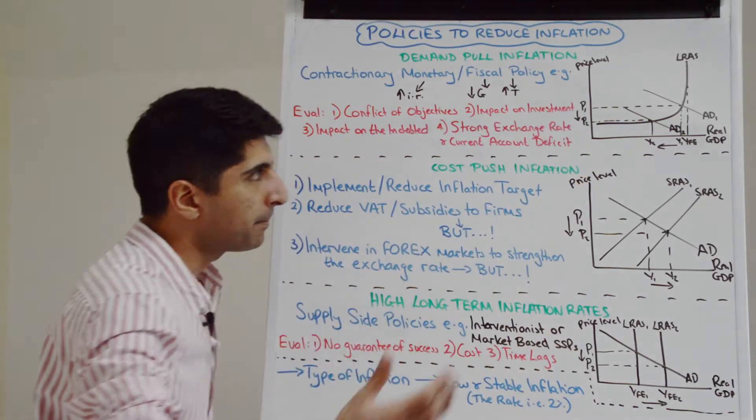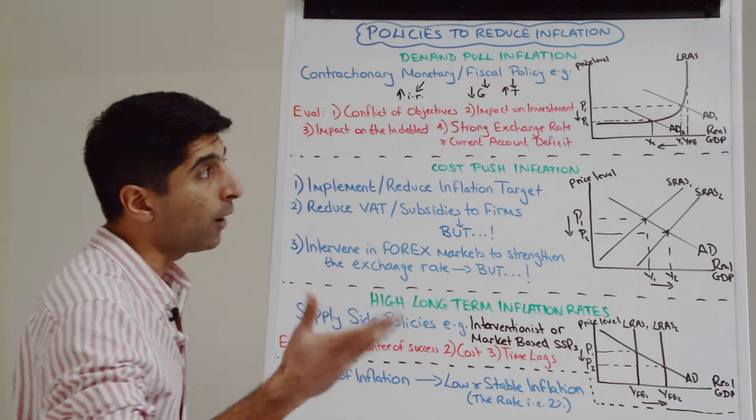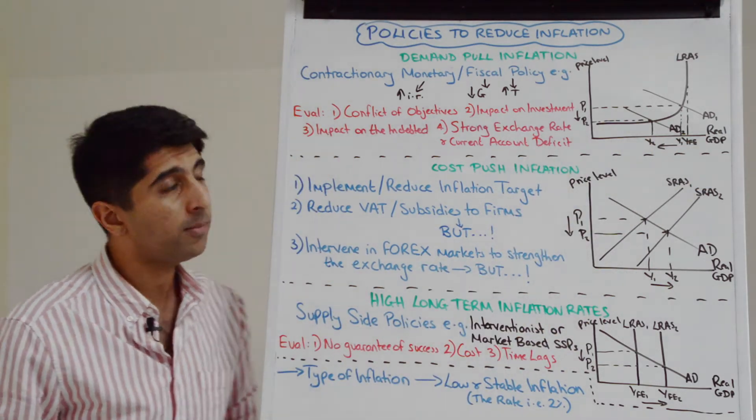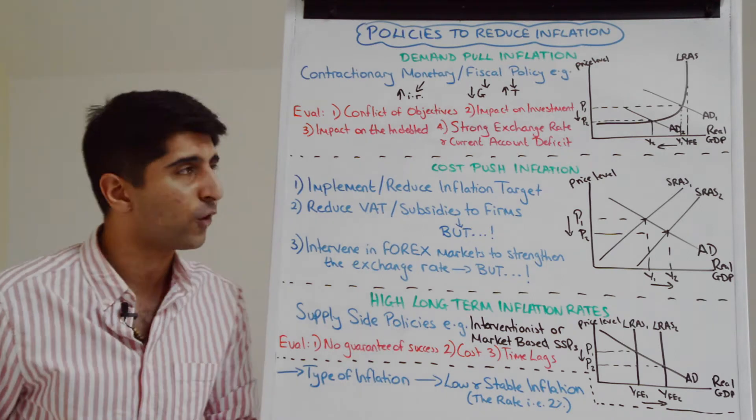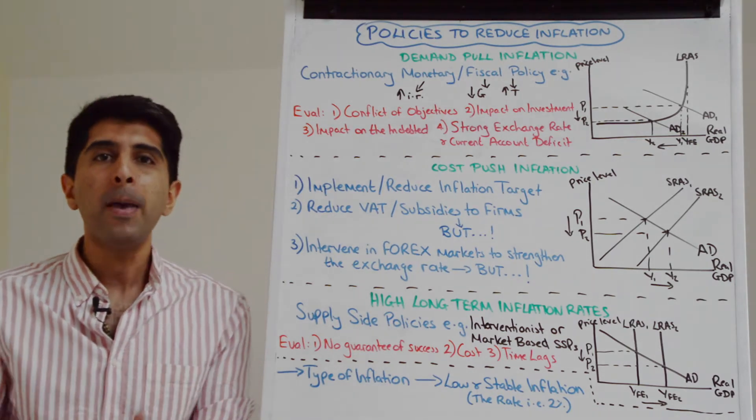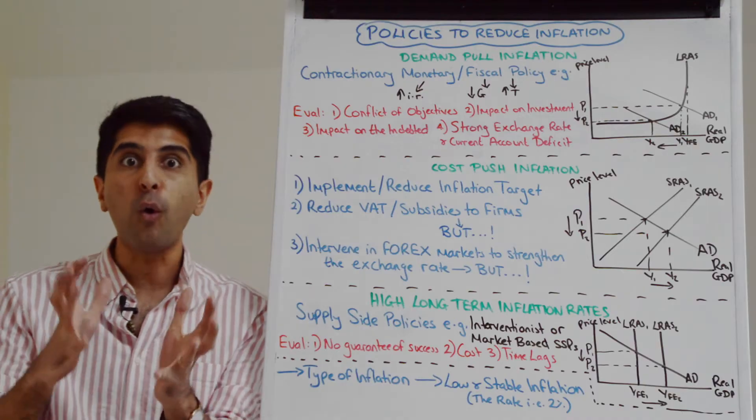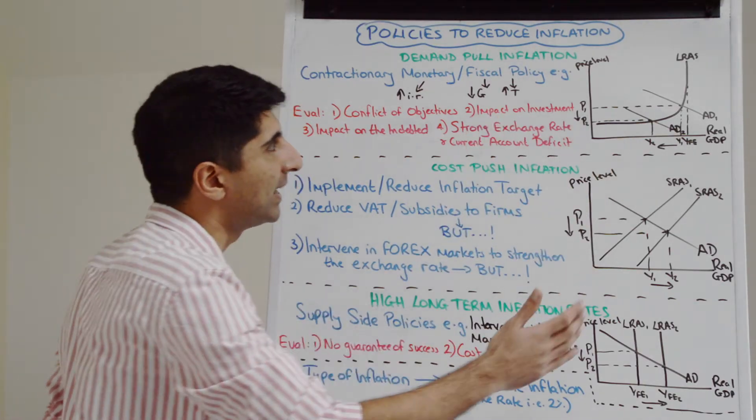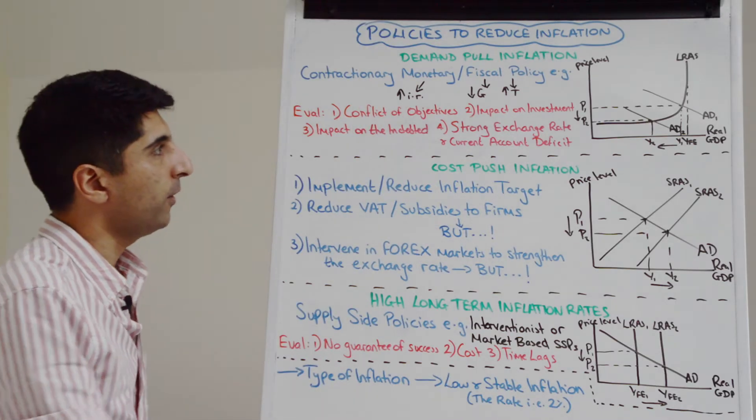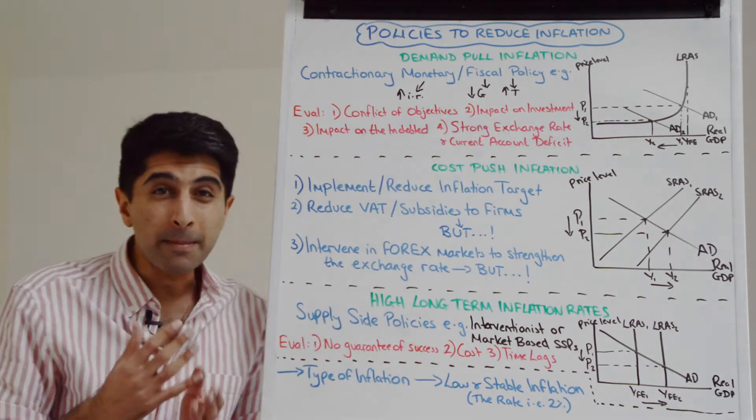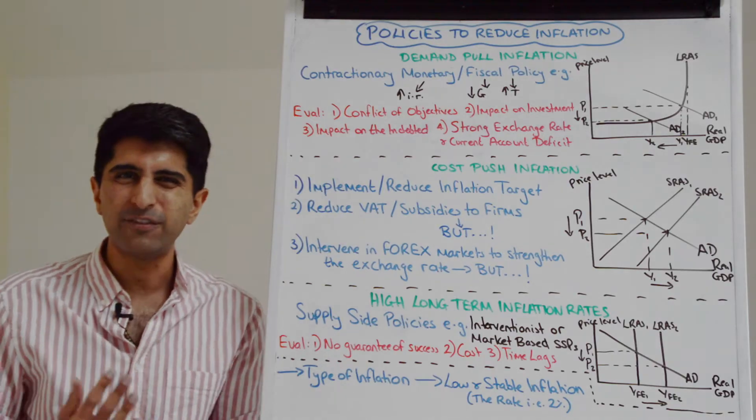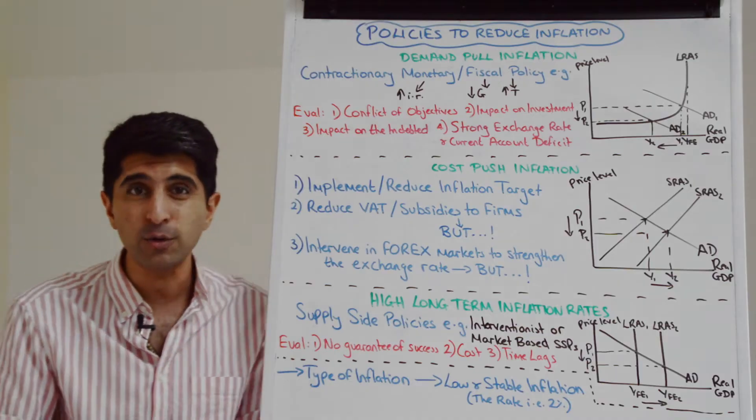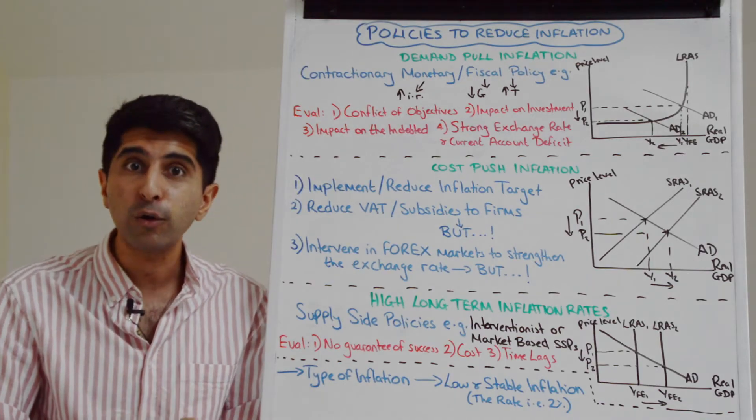Yes, we can see that demand pull inflation could well come down but at what cost? We can see lower economic growth and higher unemployment. This could well be a recession in the economy and that's not desirable at all. Remember macroeconomics is all about achieving all the core macro objectives at the same time. We lose that here if we use contractionary monetary policy. We can also worry about the impact on investment. High interest rates detract investment, increase the cost of borrowing for firms, might put them off investing and that's bad news for short-run growth but also for long-run growth.